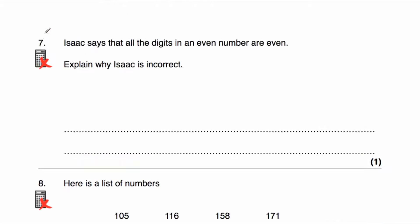Question number 7 says: Isaac says all the digits in an even number are even. Explain why Isaac is incorrect. Let's think of an even number such as 64. 64 is even because it ends in a 4. With this number, both digits are even, so Isaac seems correct. But consider 96 — it's an even number because it ends in a 6, but the tens digit is 9, and that's an odd number. So there's an even number where not all the digits are even. Isaac is incorrect because the other digits don't need to be even.